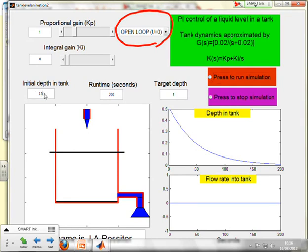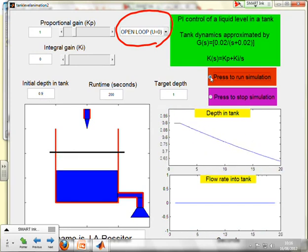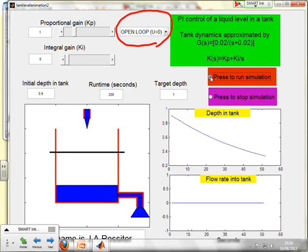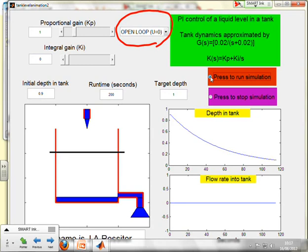If I want, I can change the initial depth. Let's say it was 0.9 and run again. And you'll see now it starts from 0.9, but again follows the exponential curve you expect as it empties.